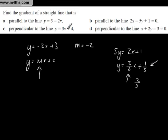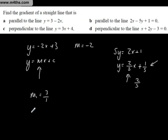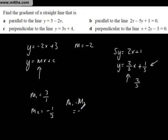For the perpendicular to the line y equals 3x plus 4, we're already in the correct form. So if gradient M1 equals 3, or 3 over 1, then M2 is going to equal negative 1 over 3, since M1 multiplied by M2 equals negative 1 for perpendicular lines.